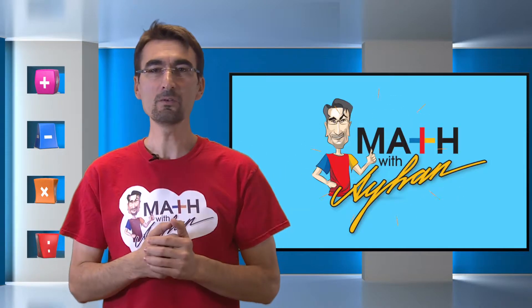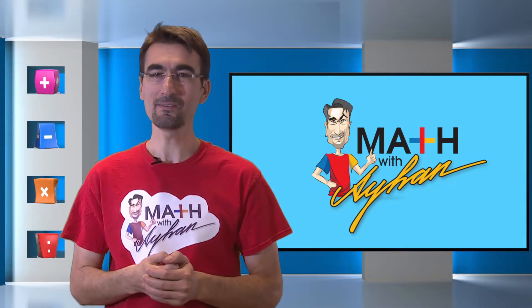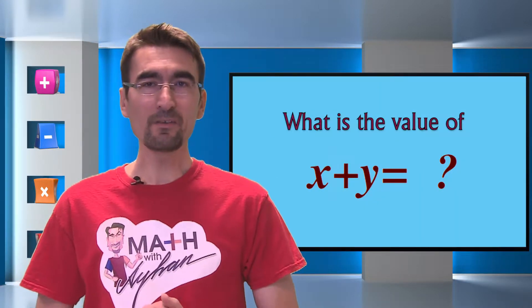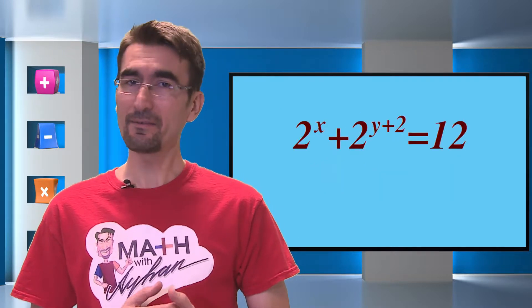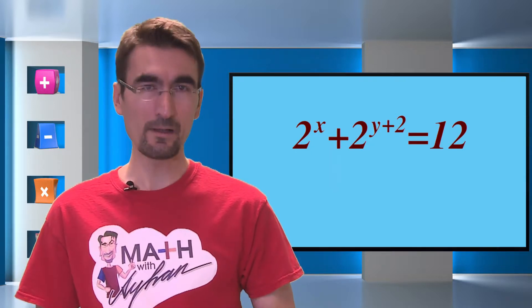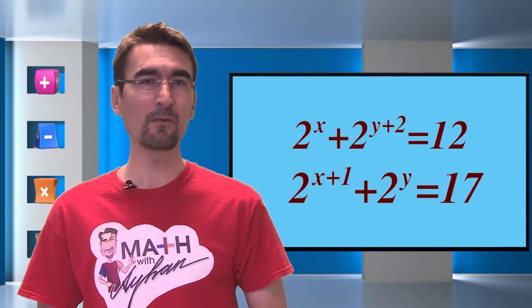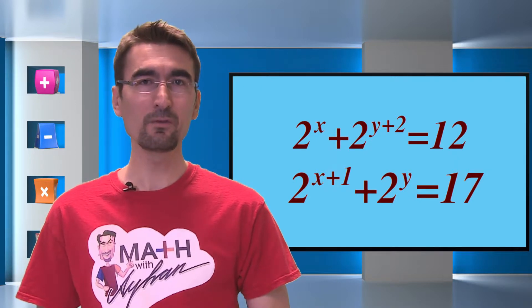Now it's time for Math with you. I'm going to give you our problem of the week and I need you to help us solve it in the comments. What is the value of x plus y for the system of equations given as 2 to the power x plus 2 to the power y plus 2 equals 12, and 2 to the power x plus 1 plus 2 to the power y equals 17?